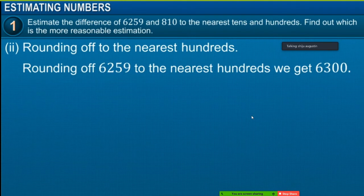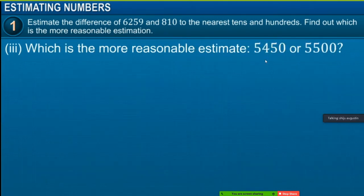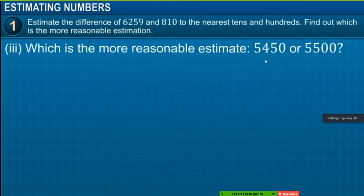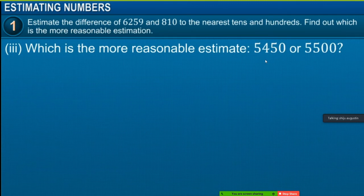To check our estimations, let us now find the actual difference between 6,259 and 810. The actual difference is 5,449. 5,450 is closer to 5,449 compared to 5,500. Therefore, 5,450 is a more reasonable estimate of the difference between 6,259 and 810 than 5,500.